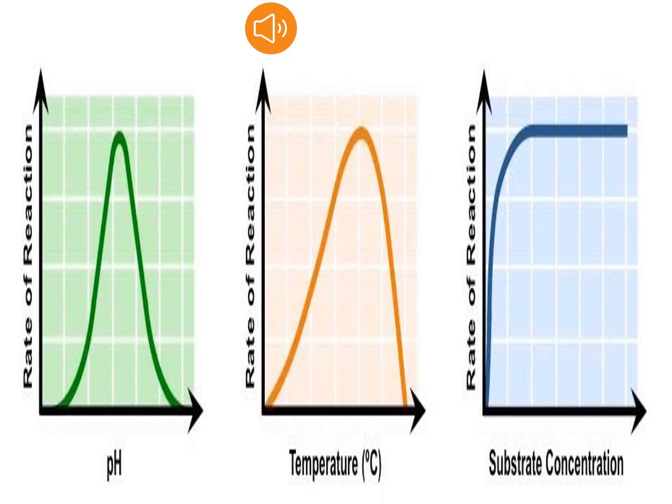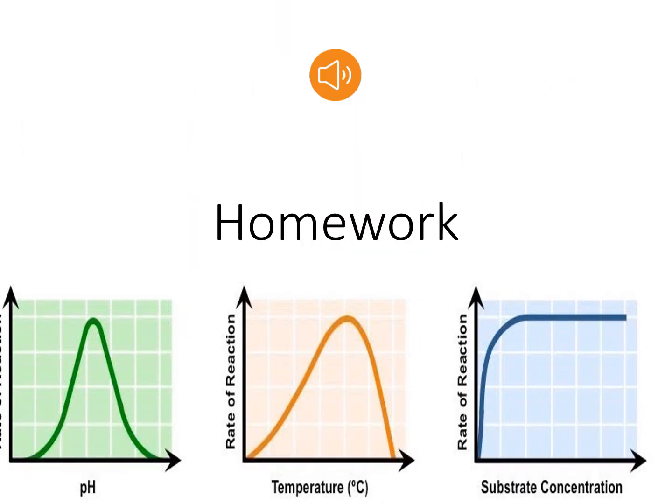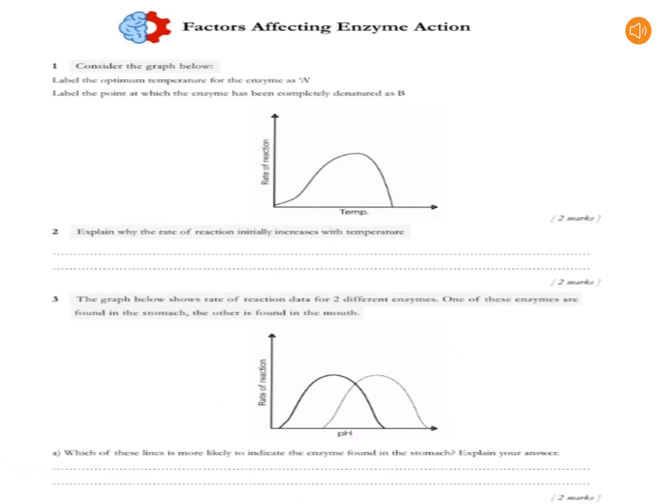We are going to review our lecture. Today we have learned about temperature, enzyme concentration, and pH. Now, move toward the homework. Your homework is on factors affecting enzyme action. Question number 1: Consider a graph below. Label the optimum temperature for the enzyme as A, and label the point at which the enzyme has been completely denatured as B — you just have to highlight on the graph where the optimum temperature is and where the enzyme gets denatured. Question number 2: Explain why the rate of reaction initially increases with temperature.